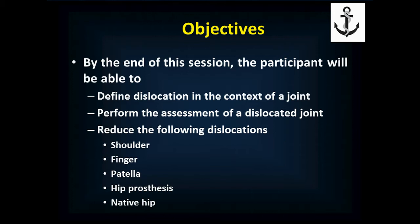We also cover quite a bit of dislocation reduction in the fracture dislocation lecture — elbows, knees, wrists — and the same techniques would apply. You won't know if it's a fracture dislocation or not because you don't have an x-ray, so you would use the same techniques regardless of whether it was a fracture and a dislocation or just a dislocation.